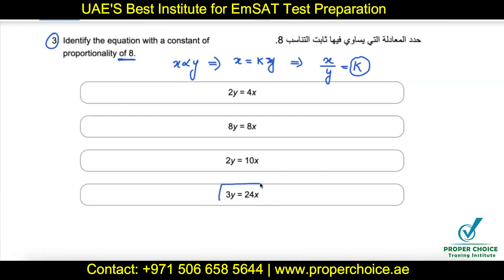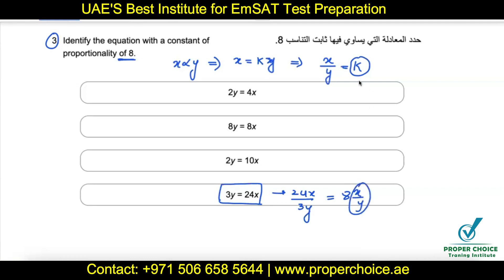They want us to find which equation gives a proportionality constant of 8. Looking at the options: 4x divided by 2y gives only 2, which is not 8. But 24x divided by 3y gives us 8. So x/y equals 8, and that constant value is 8. We go with the last option.